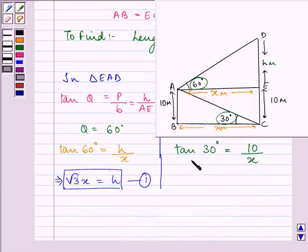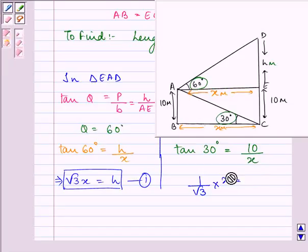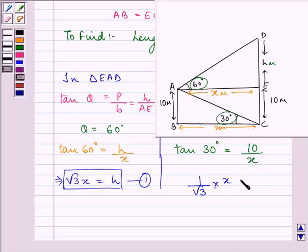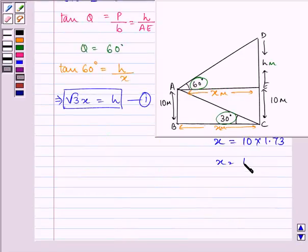Substituting the value of tan 30 degrees as 1 by root 3, we get 1 by root 3 into X is equal to 10, or X is equal to 10 root 3. We know that the value of root 3 is equal to 1.73, so X is equal to 17.3 meters.